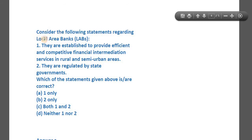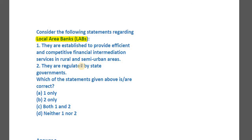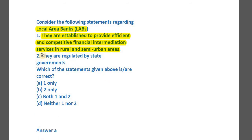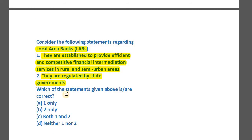Question number four: consider the following statements regarding local area banks. Statement one: they are established to provide efficient and competitive financial intermediation services in rural and semi-urban areas. Statement two: they are regulated by state governments. Which of the statements is correct — statement one only, two only, both, or neither? Pause and try to come up with the right answer.